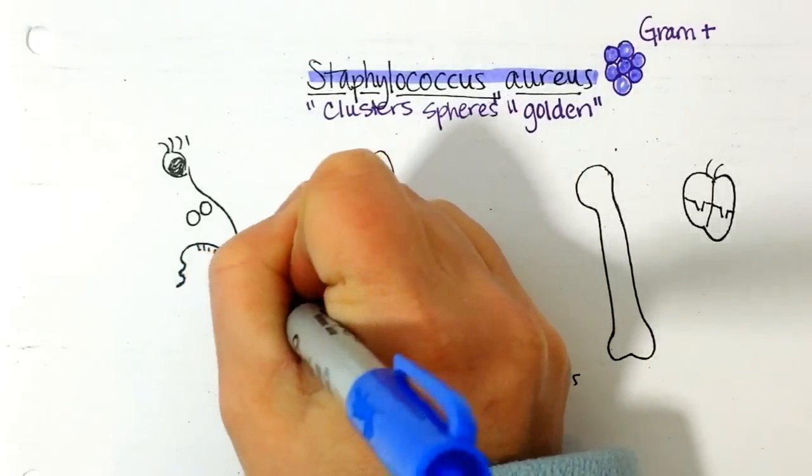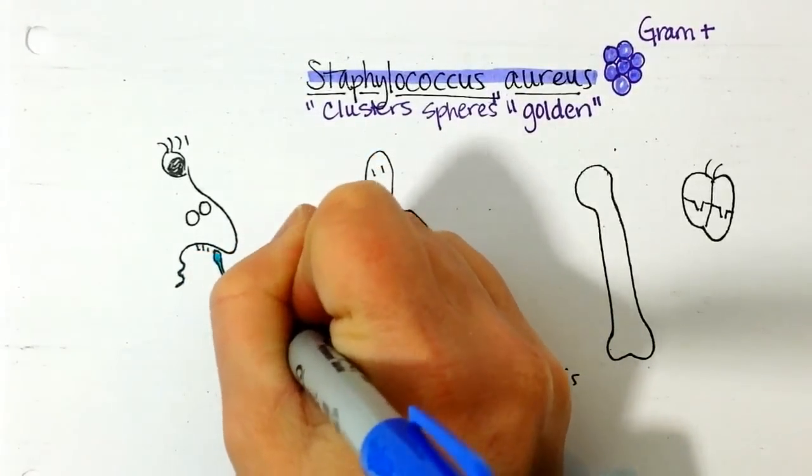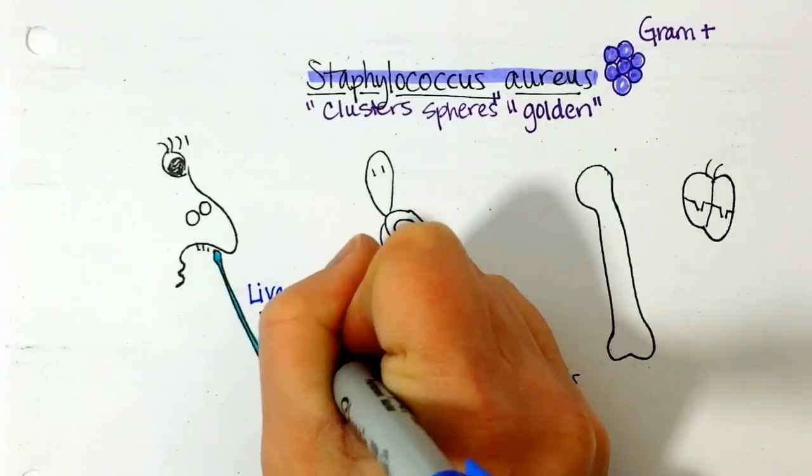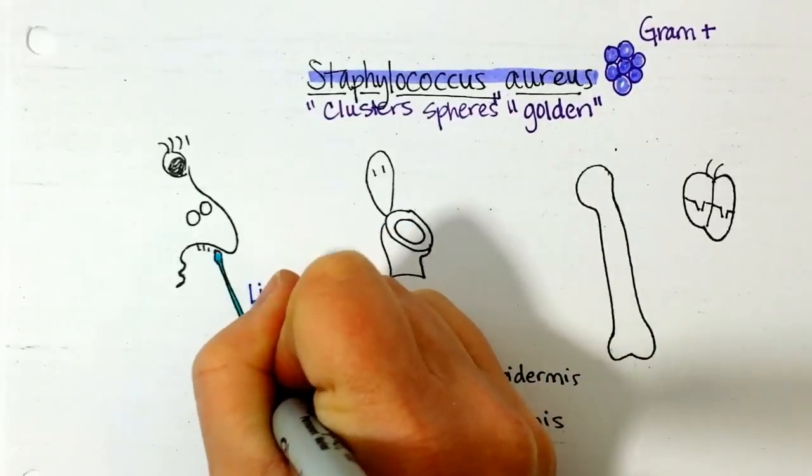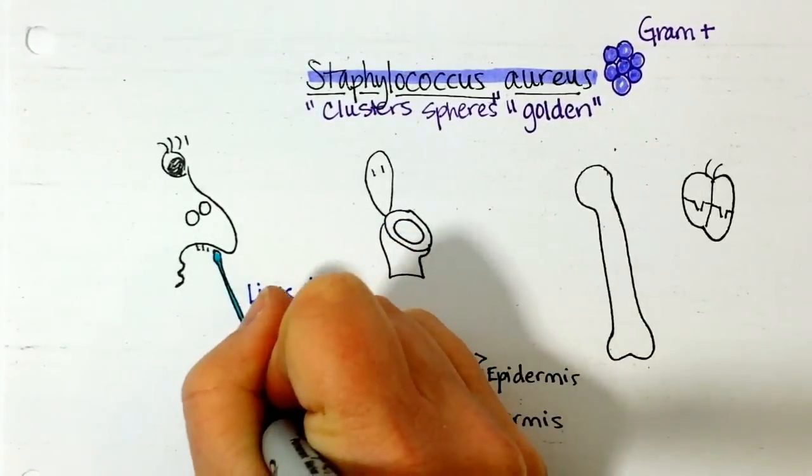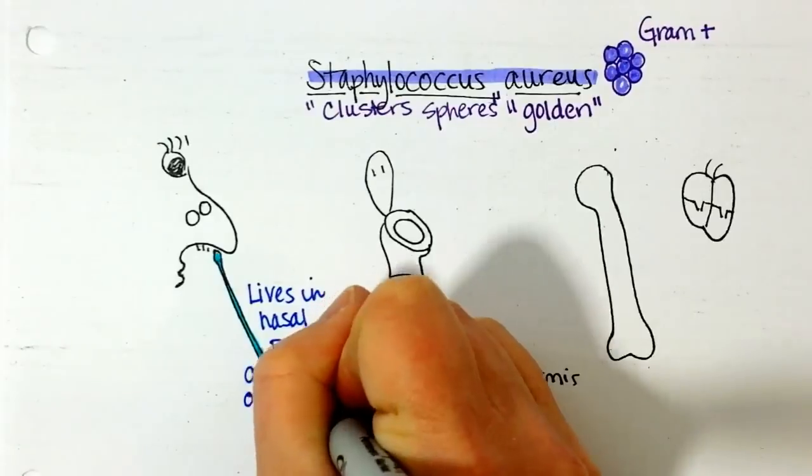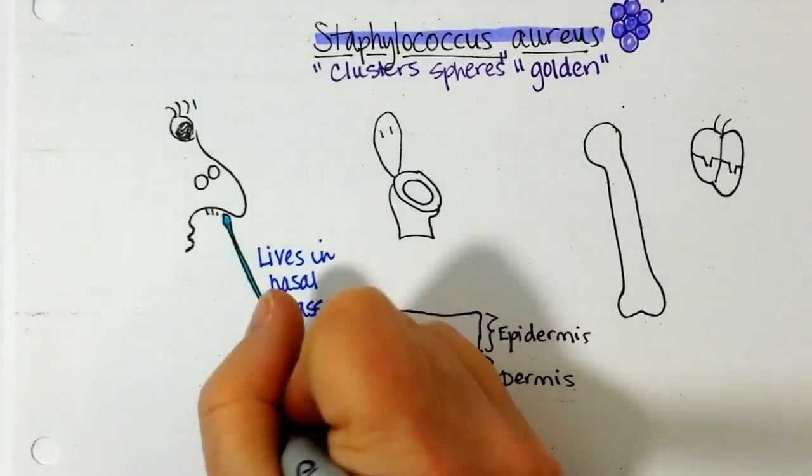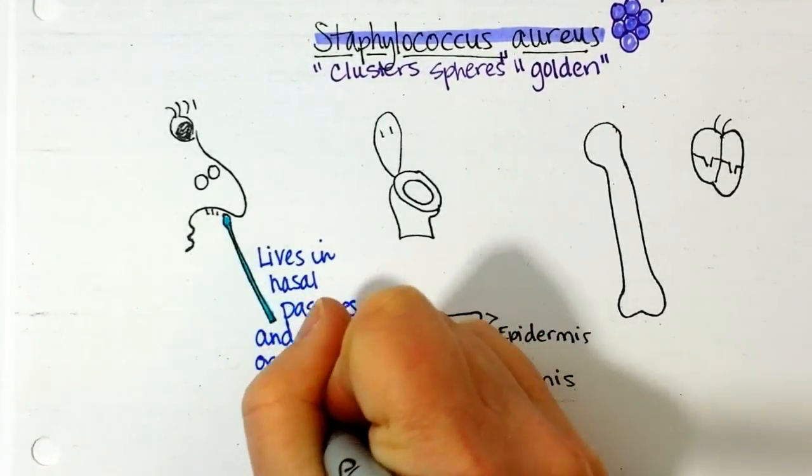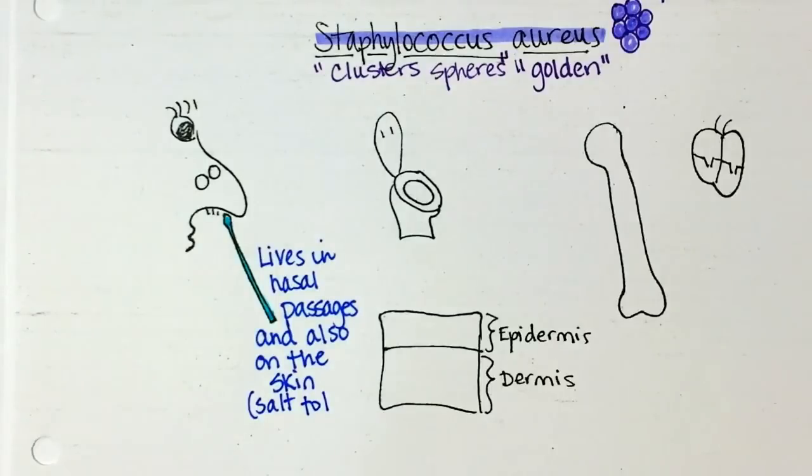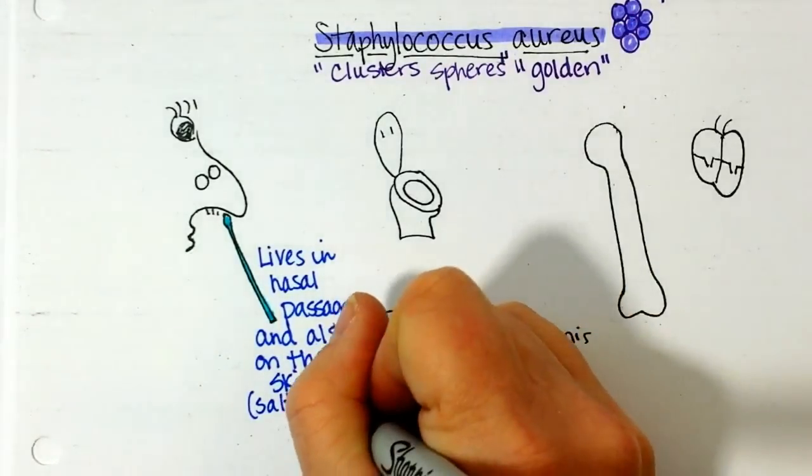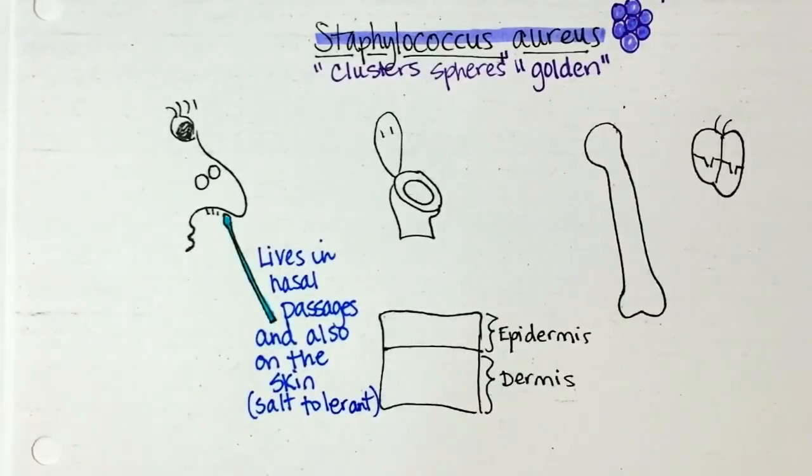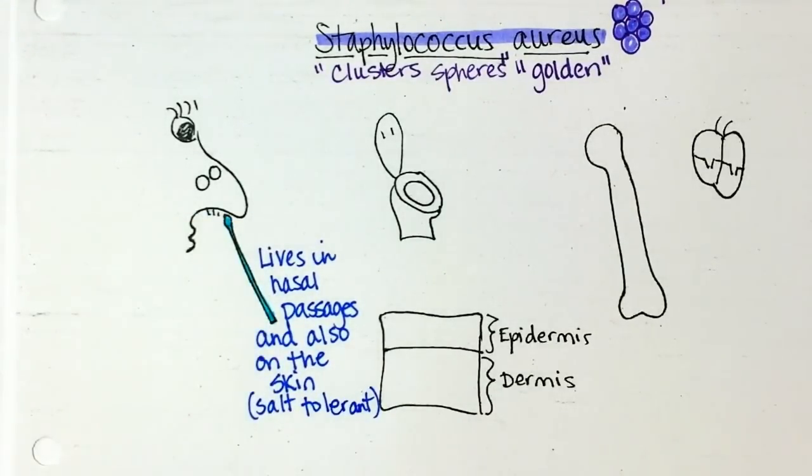So it lives in the nasal passages and also can live on the skin. What helps it do that is that it's salt tolerant. So unlike Streptococcus if someone gets a strep throat or other strep infection, strep is not salt tolerant but Staph is and so it can live on the sweaty skin. So you can take a nasal swab and grow it that way.